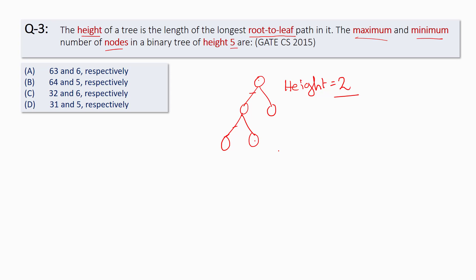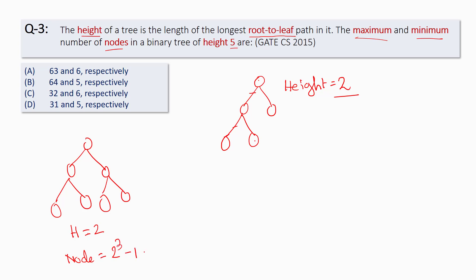A tree has the maximum number of nodes when it is a complete binary tree. For a complete binary tree of height 2, the number of nodes is 2^3 - 1, which is 7. A tree has the minimum number of nodes when it is a left or right skewed tree — a right-skewed tree of height 2 has just 3 nodes.